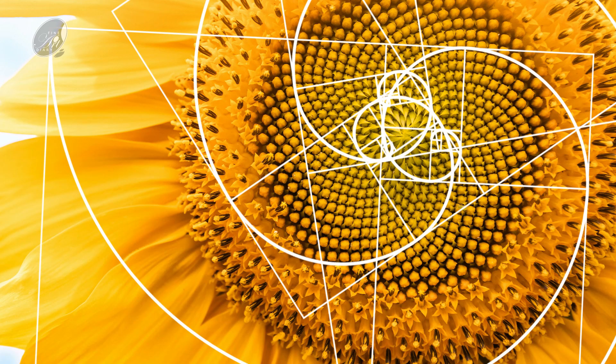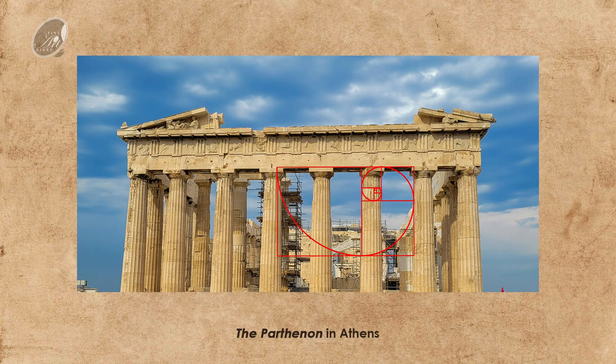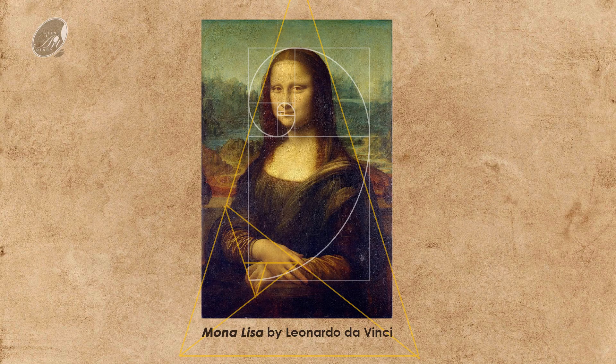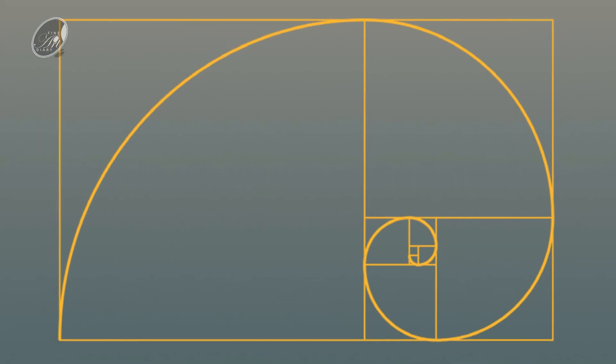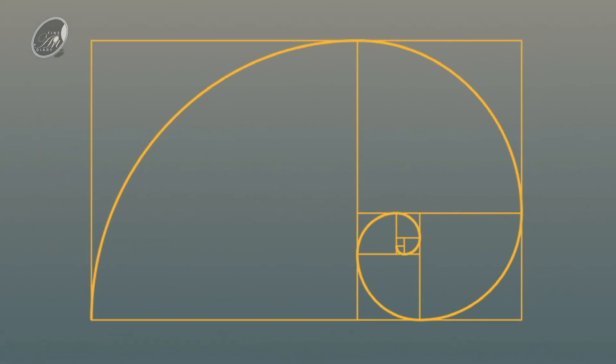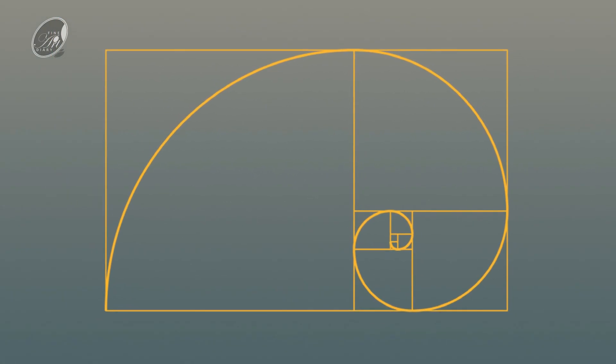This mathematical proportion has been observed in nature, architecture, and even in art. It is often represented by a golden rectangle. If this side is 1, then this side will be 1.618 — that is a golden rectangle. Another common way to visualize it is through the golden spiral, which is derived from a series of golden rectangles placed together.